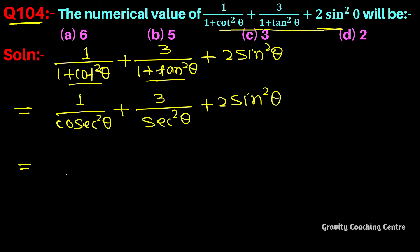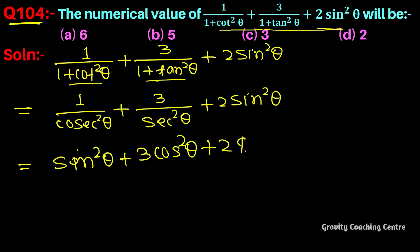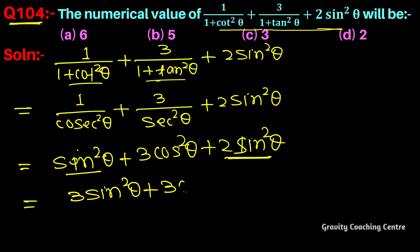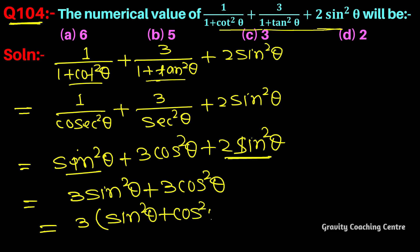Since 1 by cos is 1, this gives us sin²θ and cos²θ terms. We get 2 sin²θ squared, and then 3 sin²θ plus 3 cos²θ, with 3 common, using the identity sin²θ plus cos²θ equals 1.